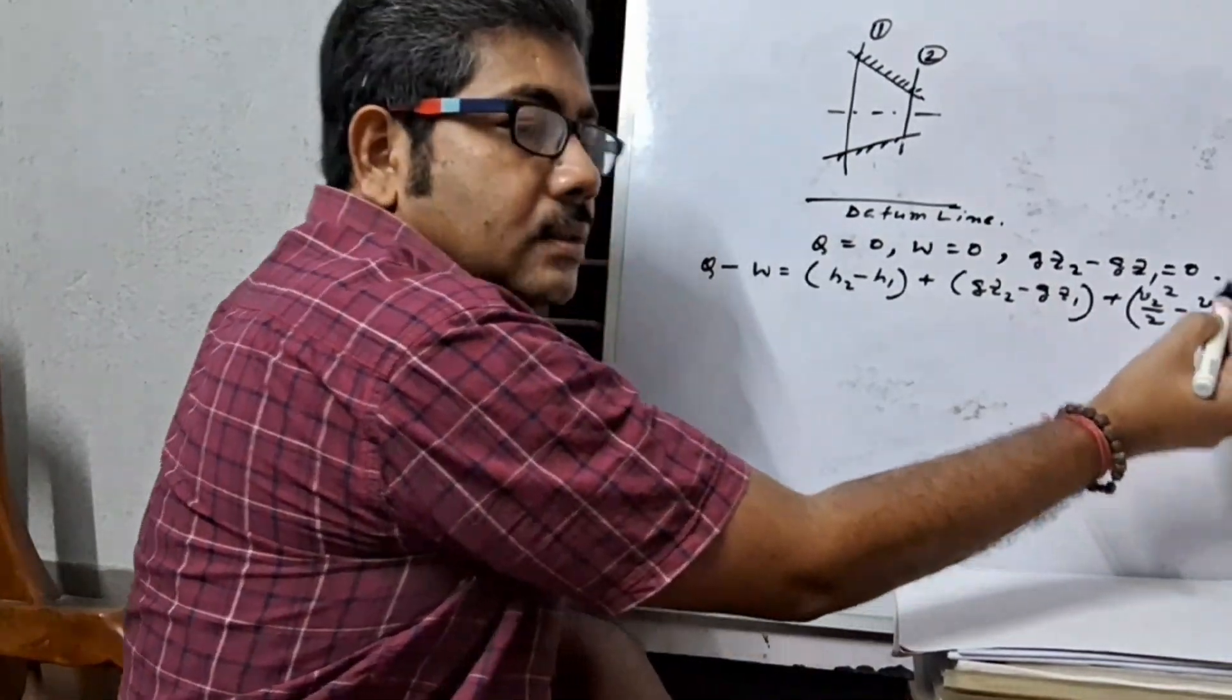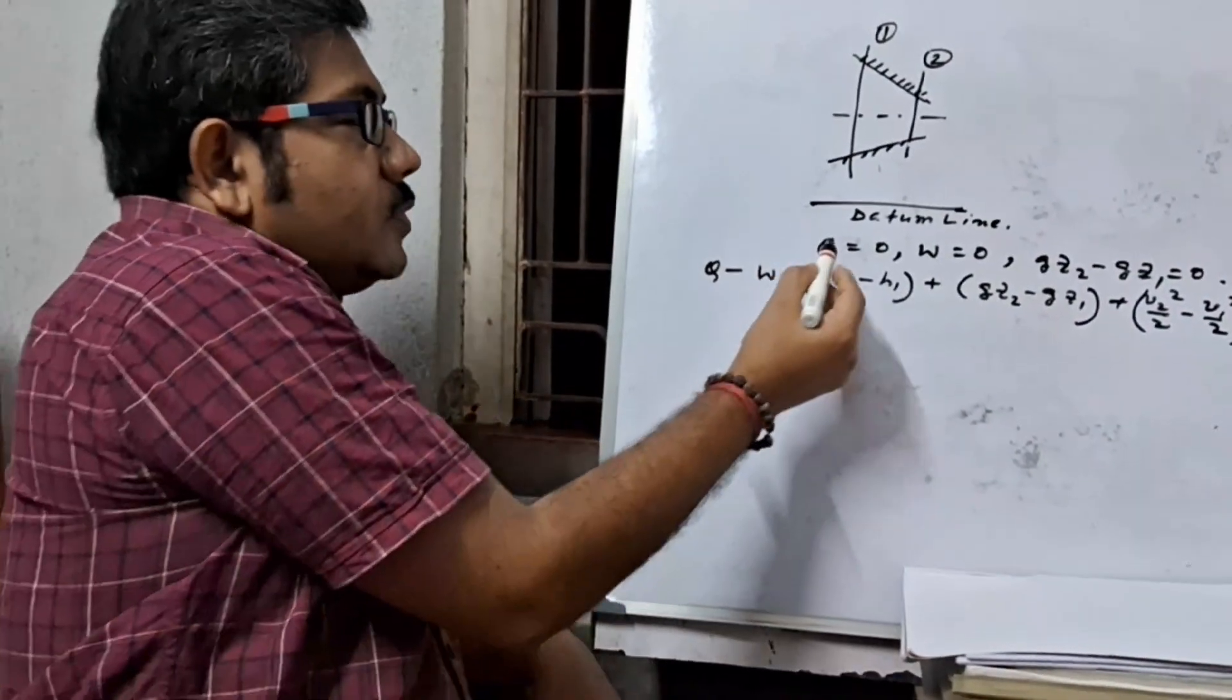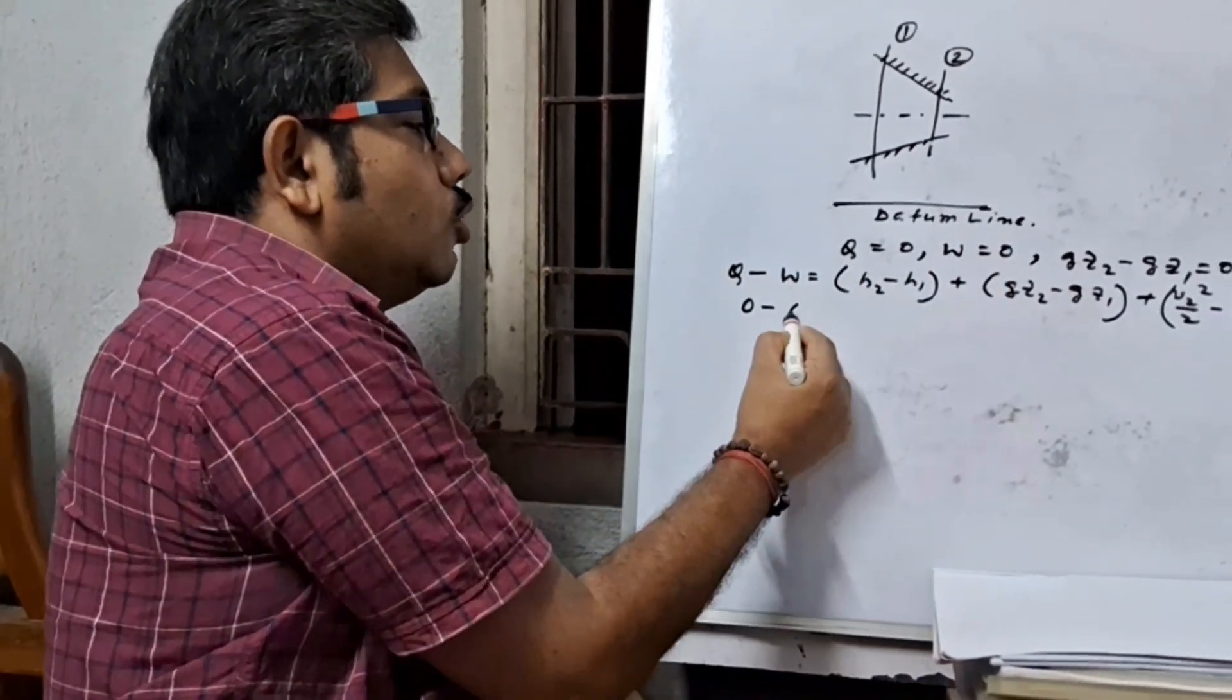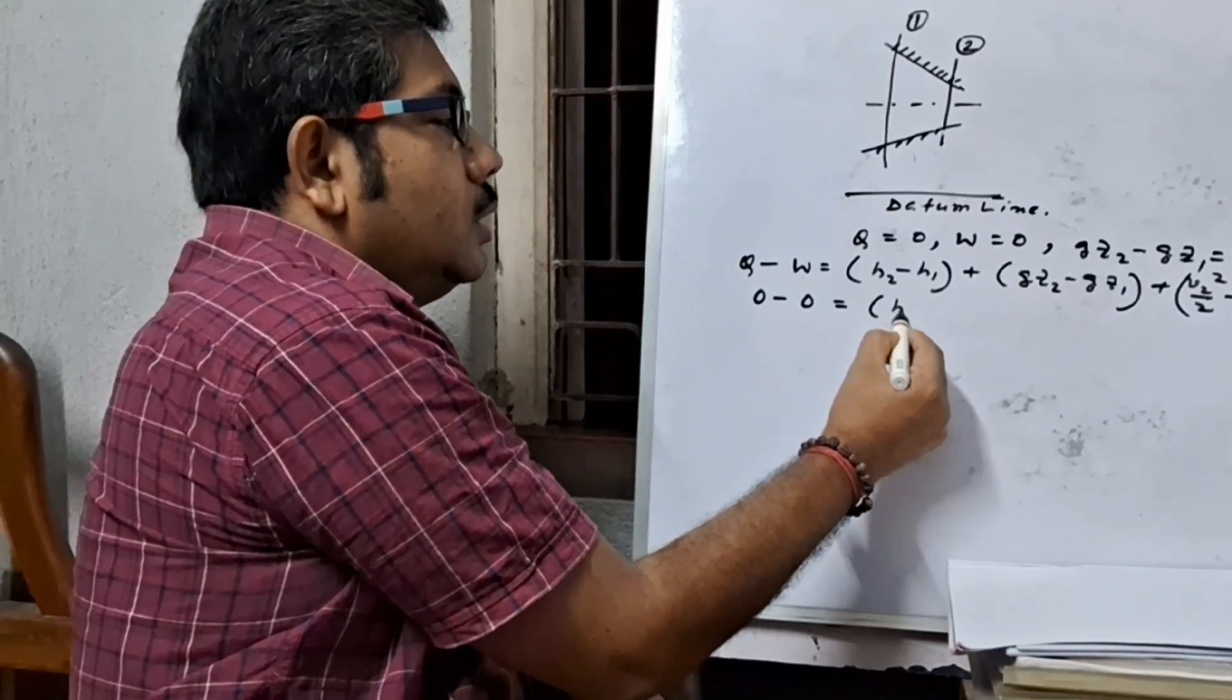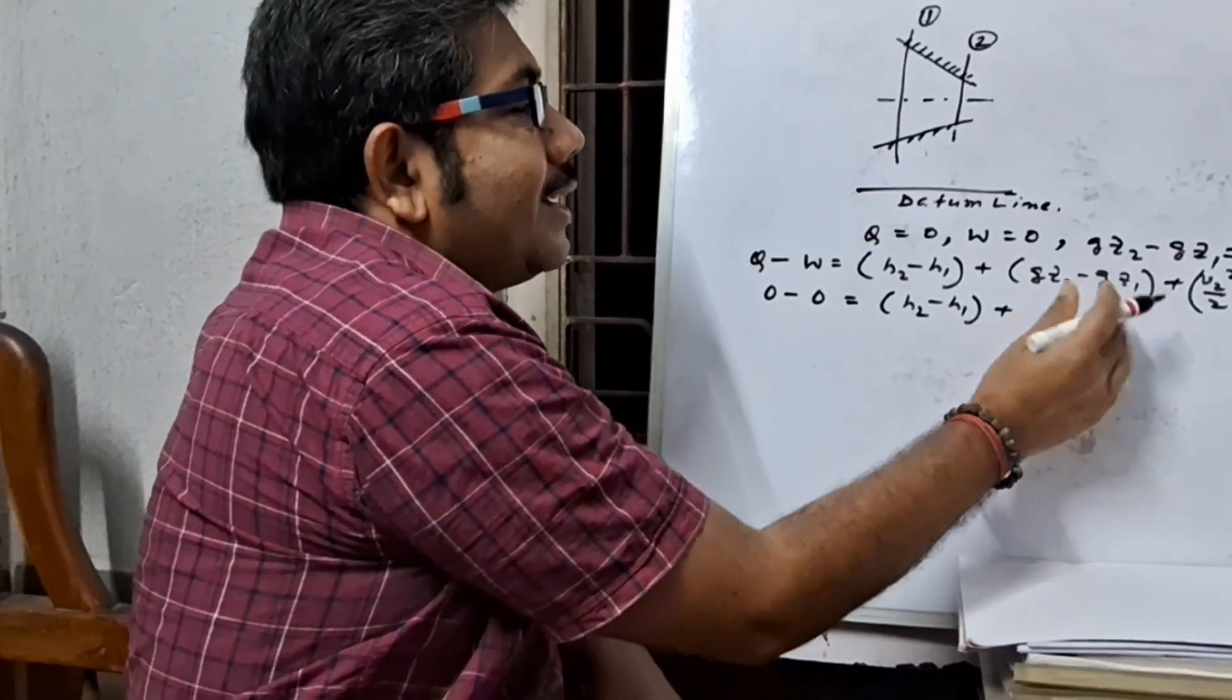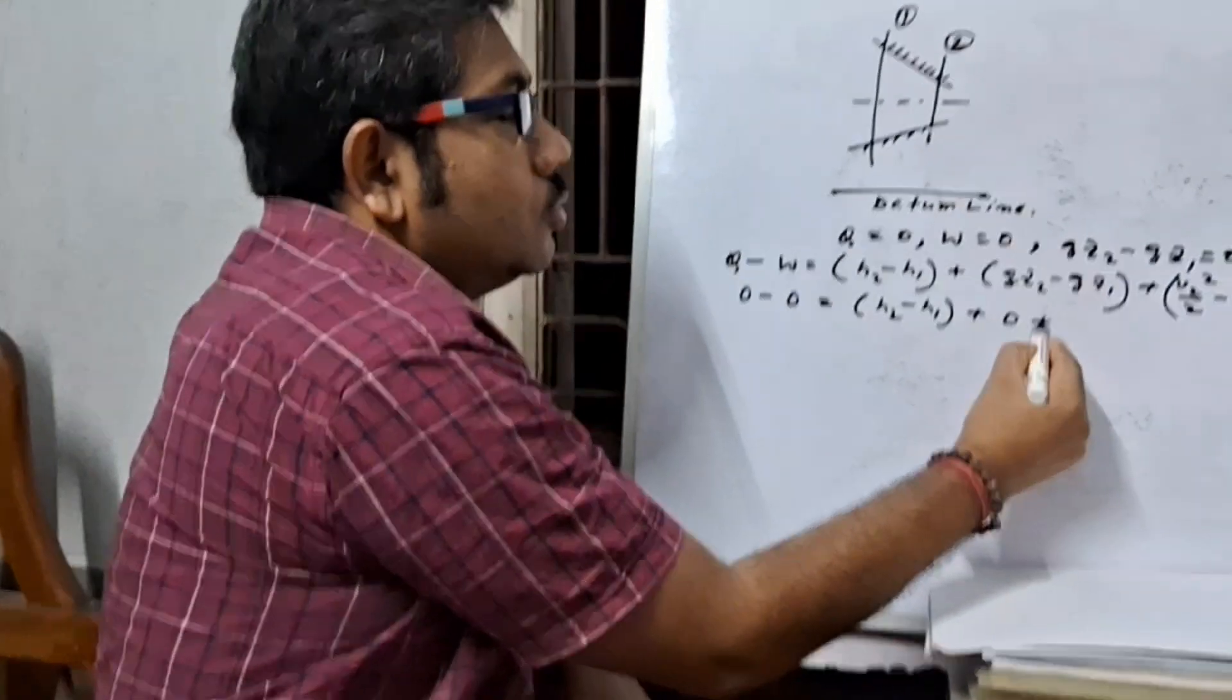Now putting the above values in this equation, q equals 0, this is h2 minus h1 plus this is equal to 0, and here v2 squared by 2 minus v1 squared by 2.